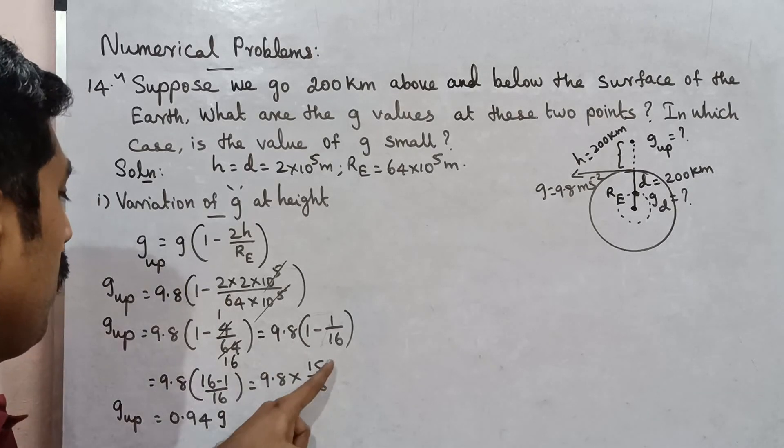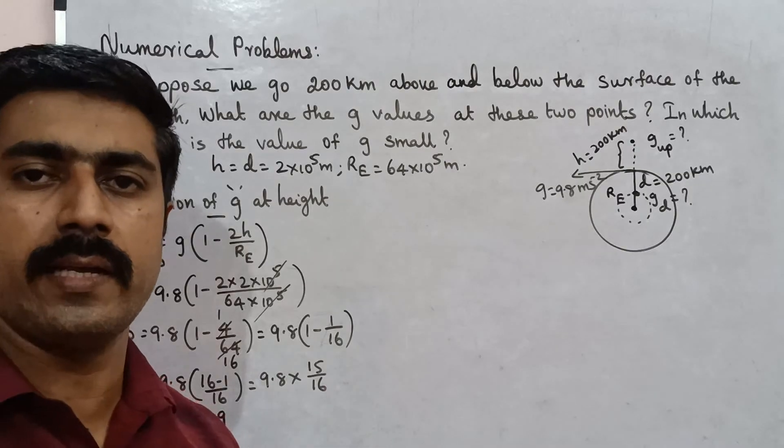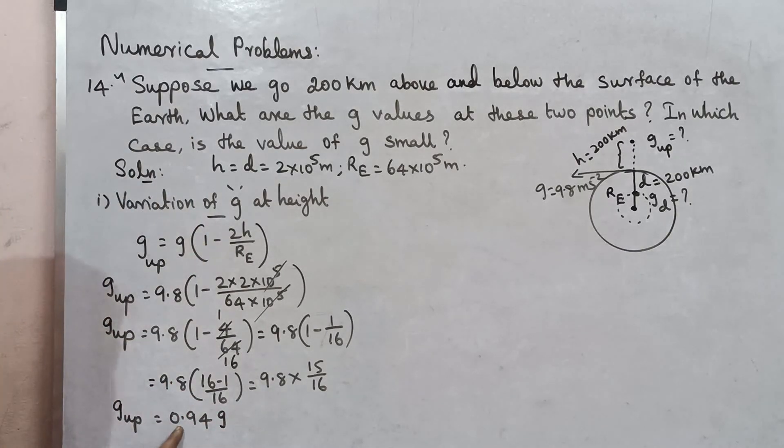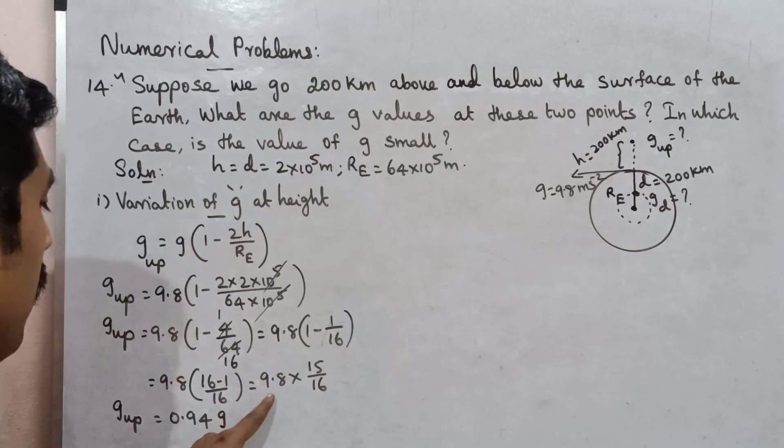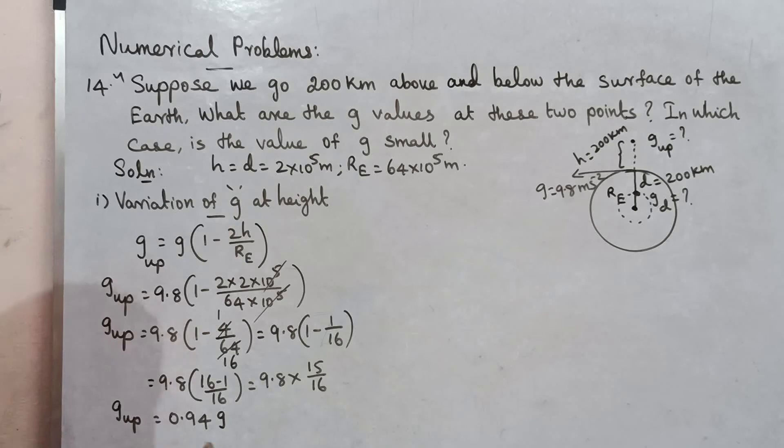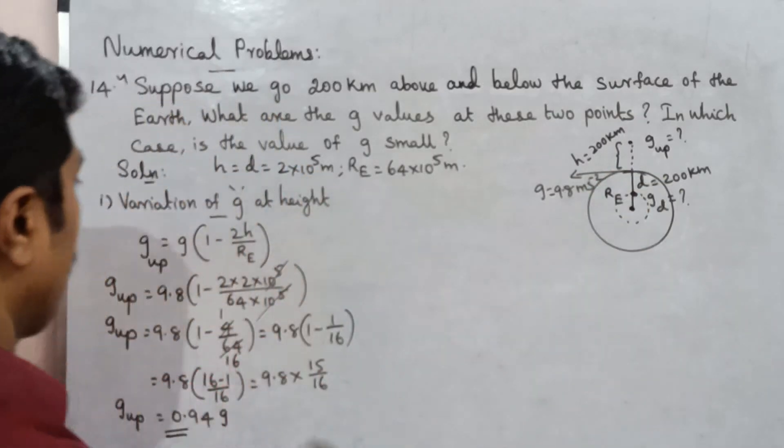So 15 by 16 is equal to 0.94 times 9.8, and 9.8 is equal to g. So that is equal to 0.94 times acceleration due to gravity on the surface.